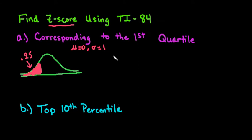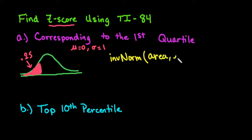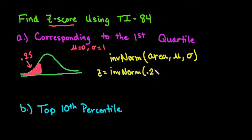We're going to use our calculator to help us find that, specifically using inverse norm. The parameters you need are the area — which would be 0.25 — the mean, which we use 0, and the standard deviation, which we use 1. So z is equal to the inverse norm of 0.25, 0, 1.